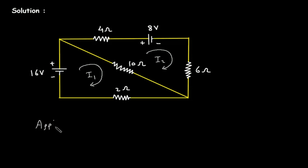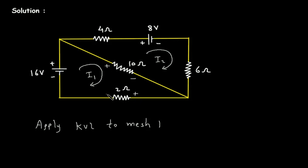Now we will apply KVL to mesh number 1. Before that, we will mark polarities: this will be positive and this will be negative according to the direction of current I1. Also, according to the direction of current I2, this will be at higher potential and this will be at lower potential. Now we will mark these.